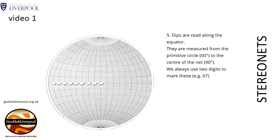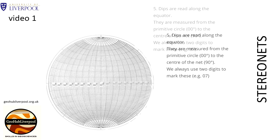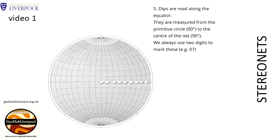Measurements of dip to the west are measured on the equator to the west of the north-south line. Measurements of dip to the east are measured on the equator to the east of the north-south line.